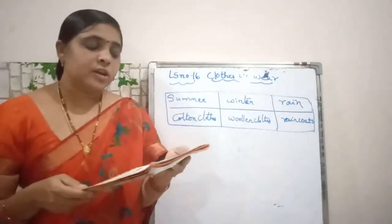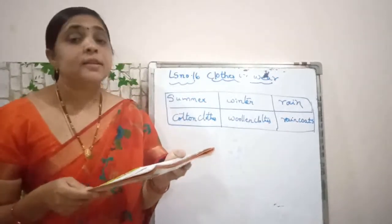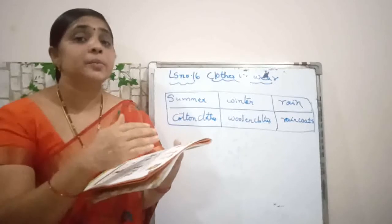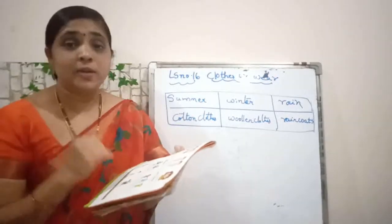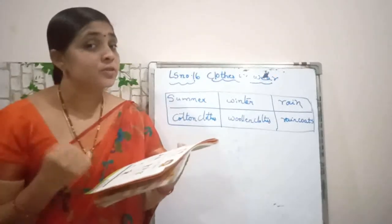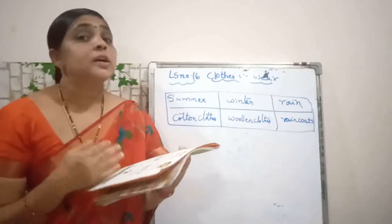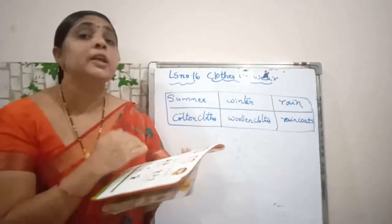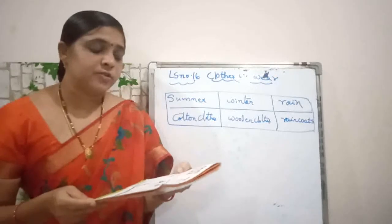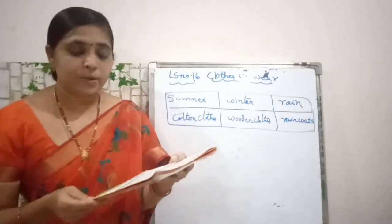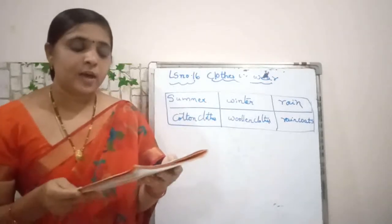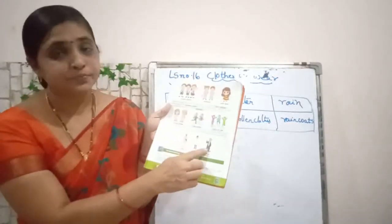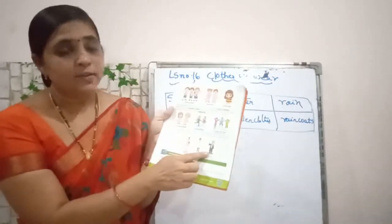We may also use different types of clothes at the workplace. Whatever work your parents are doing, they will be using different types of clothes. For example, police use a police dress, a doctor uses a coat and apron, and a lawyer uses a coat. Different types of professions require different types of dresses. Certain types of jobs need special clothes.